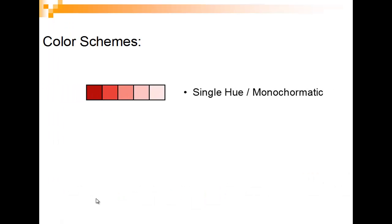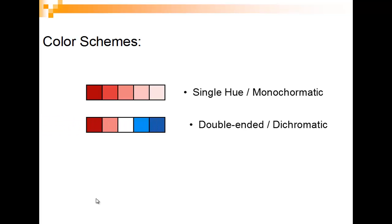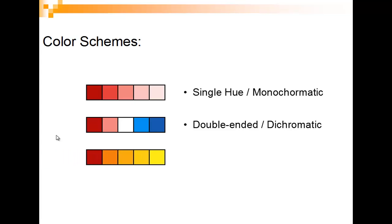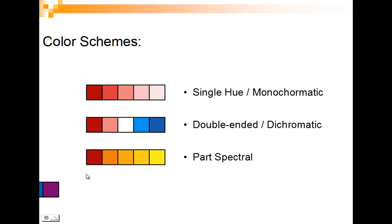When we work with color schemes, we have what we call single hue or monochromatic. We have double-ended or dichromatic — I like working with these, especially if the middle value is going to be our mean, so we work above and below the mean. For temperatures this works well. I work from reds to greens — for the military, green means good, red means bad. And then we have what's called part spectral, where we go from yellow to brown to get a few more classes.